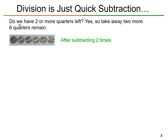Ask yourself: do we have 2 or more quarters left? In the last slide, we had 8 quarters left. Yes, 8 is more than 2, so we have at least 2 left. So, take away 2 more. If we take away 2 from the 8, we have 6 quarters remaining — 1, 2, 3, 4, 5, 6. After the second subtraction, we have 6 quarters remaining.